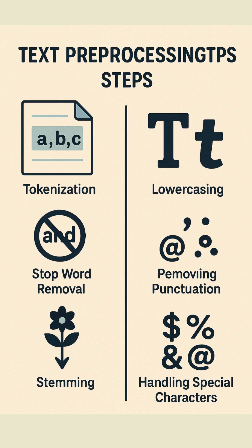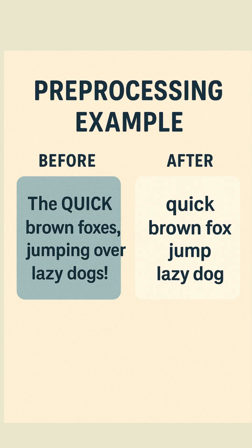The next step is handling special characters — cleaning symbols and special characters that might interfere with processing. For example, the sentence 'the quick brown foxes jumping over lazy dogs' becomes 'quick brown fox jump lazy dog' after preprocessing.